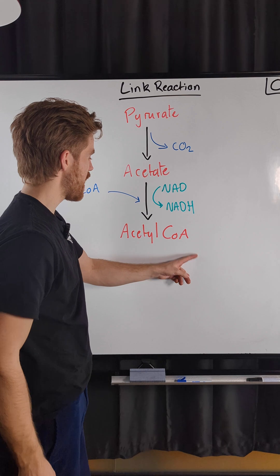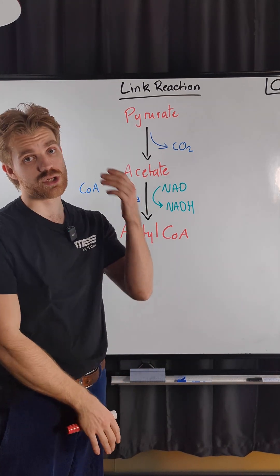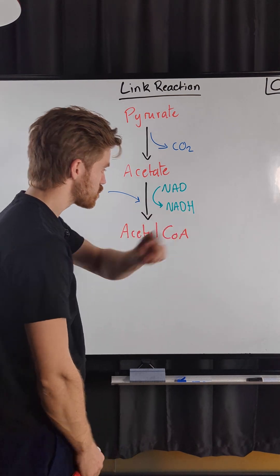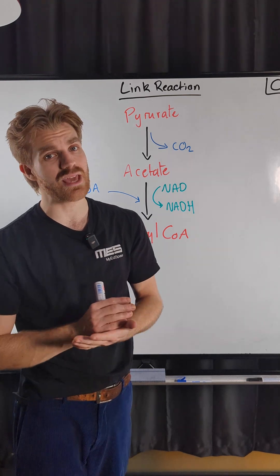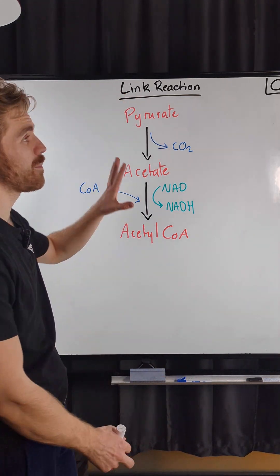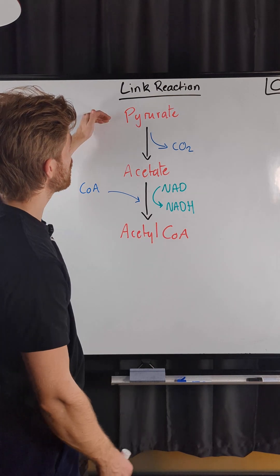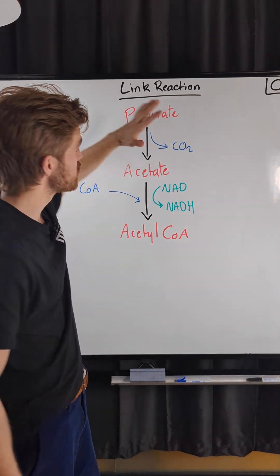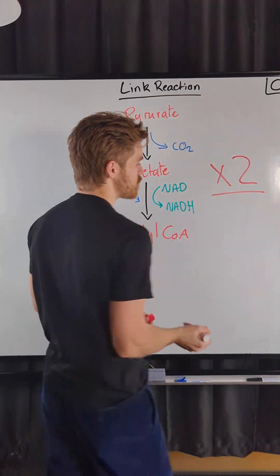And this Acetyl CoA is now going to go on to the Krebs cycle and we're going to now start to produce loads more of these reduced coenzymes as well. Really important thing to remember that lots and lots of people forget though is that the whole link reaction is happening twice per glucose because glucose produces two pyruvate so all of this happens two times.